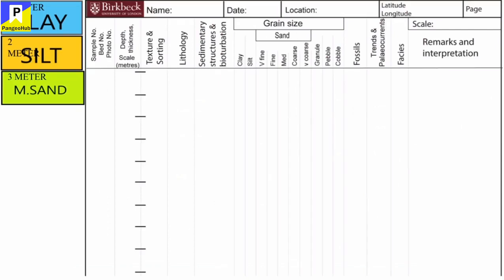If we have to draw a graphic sedimentary log, let us take an example of a succession which contains three types of beds. In the lowermost bed, the grain size is medium sand and the thickness of the bed is 3 meters. The middle bed has a thickness of 2 meters and the grain size is silt. The top bed has a grain size of clay and the thickness is 1 meter. When constructing a graphic sedimentary log, we should start from below so that one can know how the sequence of sedimentation changes with time.